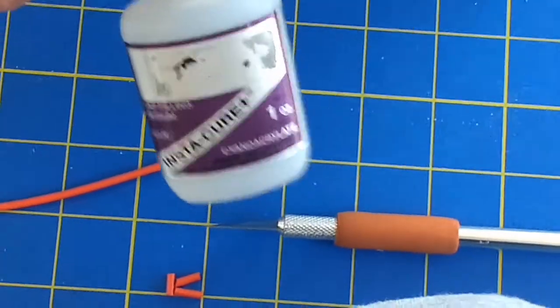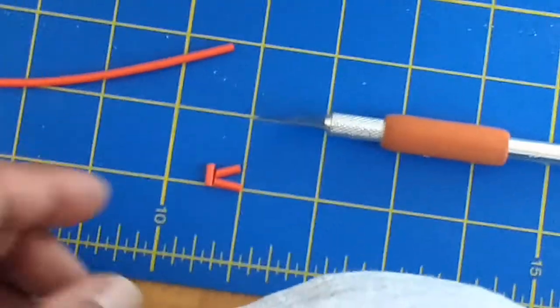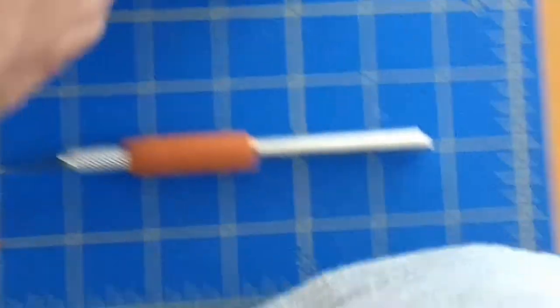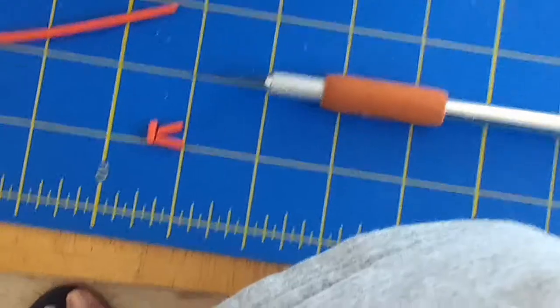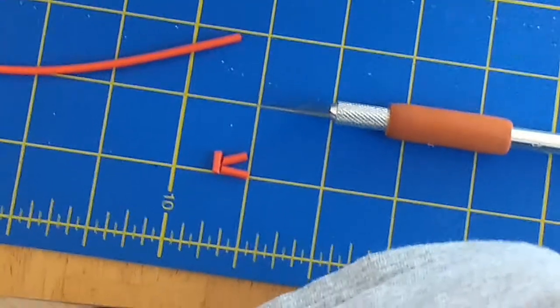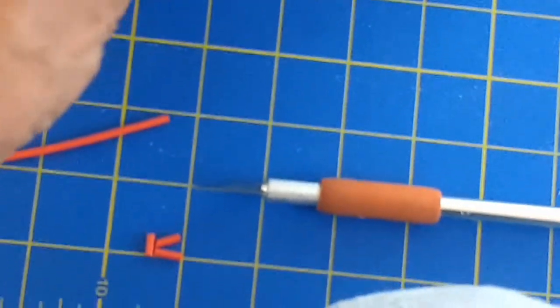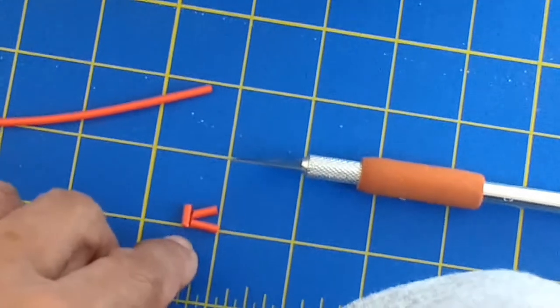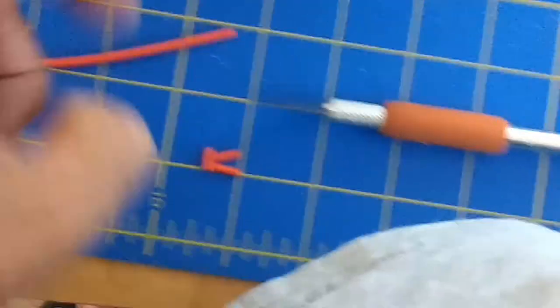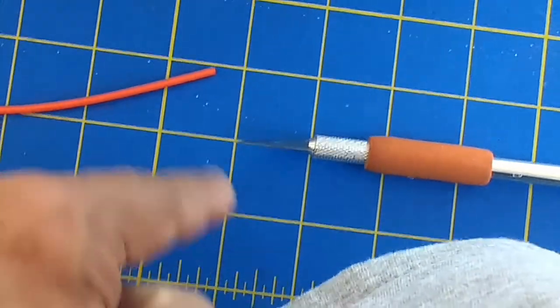I use this particular glue here, Insta-Cure. It's not a very fine glue. It's got a little more, it's a medium gap filling type glue. It's not a really thin one because the thin one tends to just spill all over. So this one is gap filling and it'll create little fillets as you're building these connectors, and so it'll retain a little bit better.